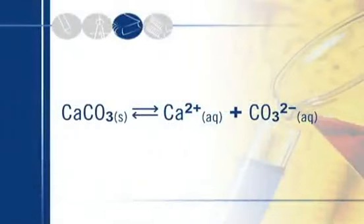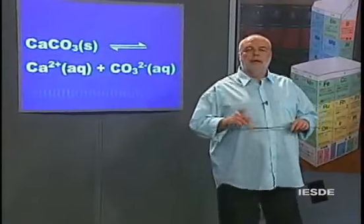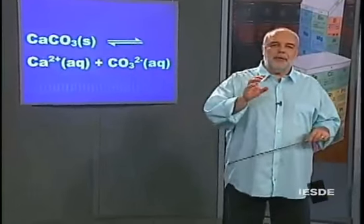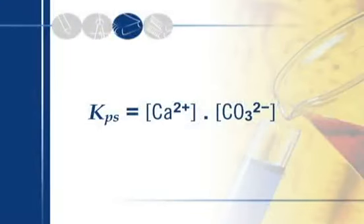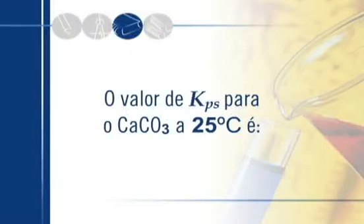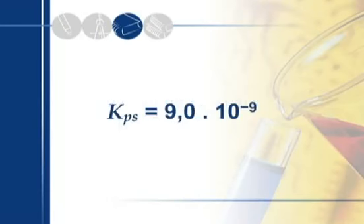Exatamente por não se dissolverem muito, eles formam soluções saturadas extremamente diluídas. Vamos trabalhar exatamente a ideia do carbonato de cálcio, o mármore. O carbonato de cálcio sólido que se dissolve o faz quebrando em íons: o cátion cálcio 2+, aquoso, e o ânion CO₃²⁻, aquoso. O lado direito da reação é a parte que se dissolve — daí o termo produto de solubilidade. A constante de equilíbrio para essa reação é KPS = [Ca²⁺] × [CO₃²⁻], e seu valor a 25°C é 9 × 10⁻⁹.